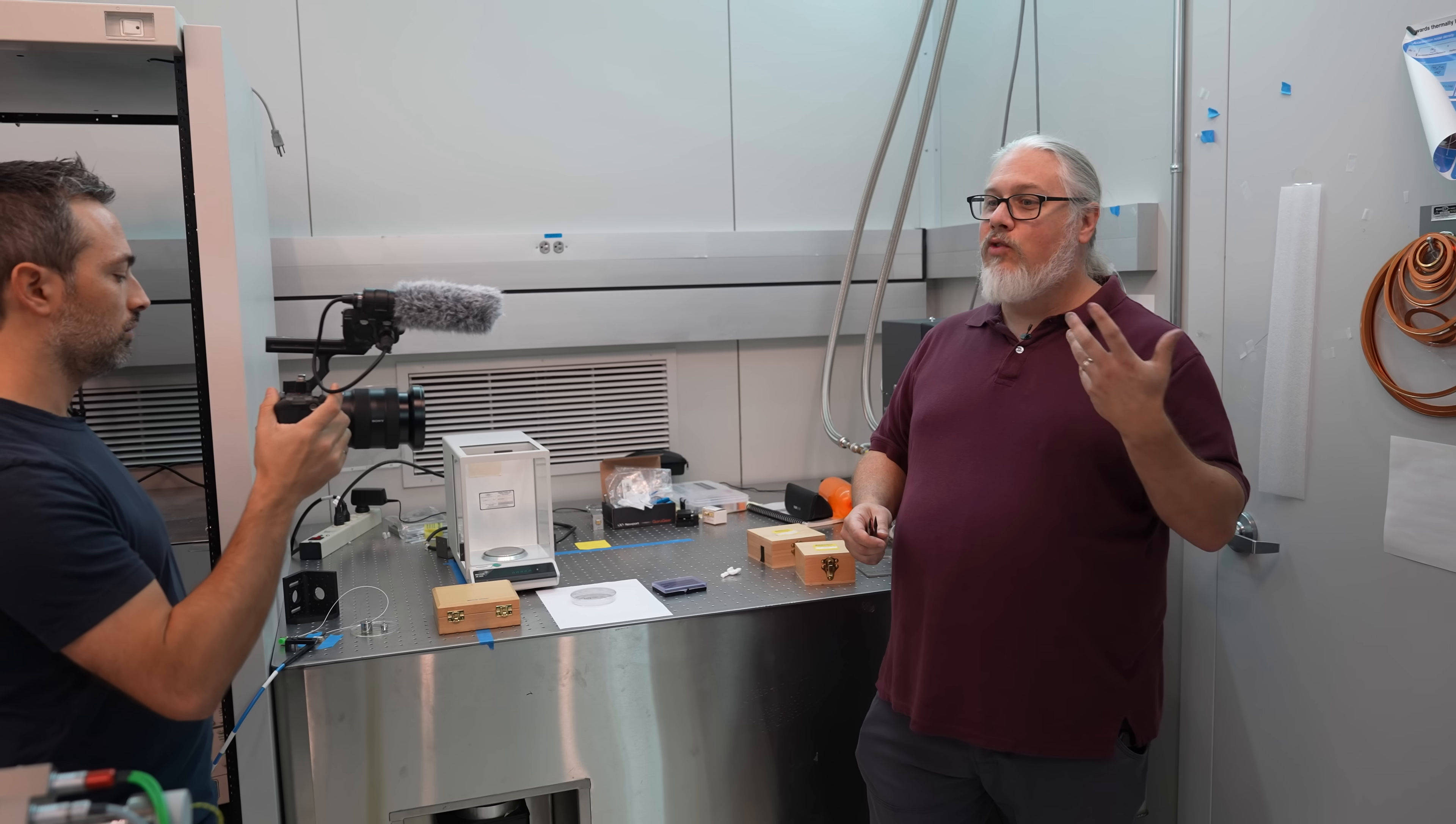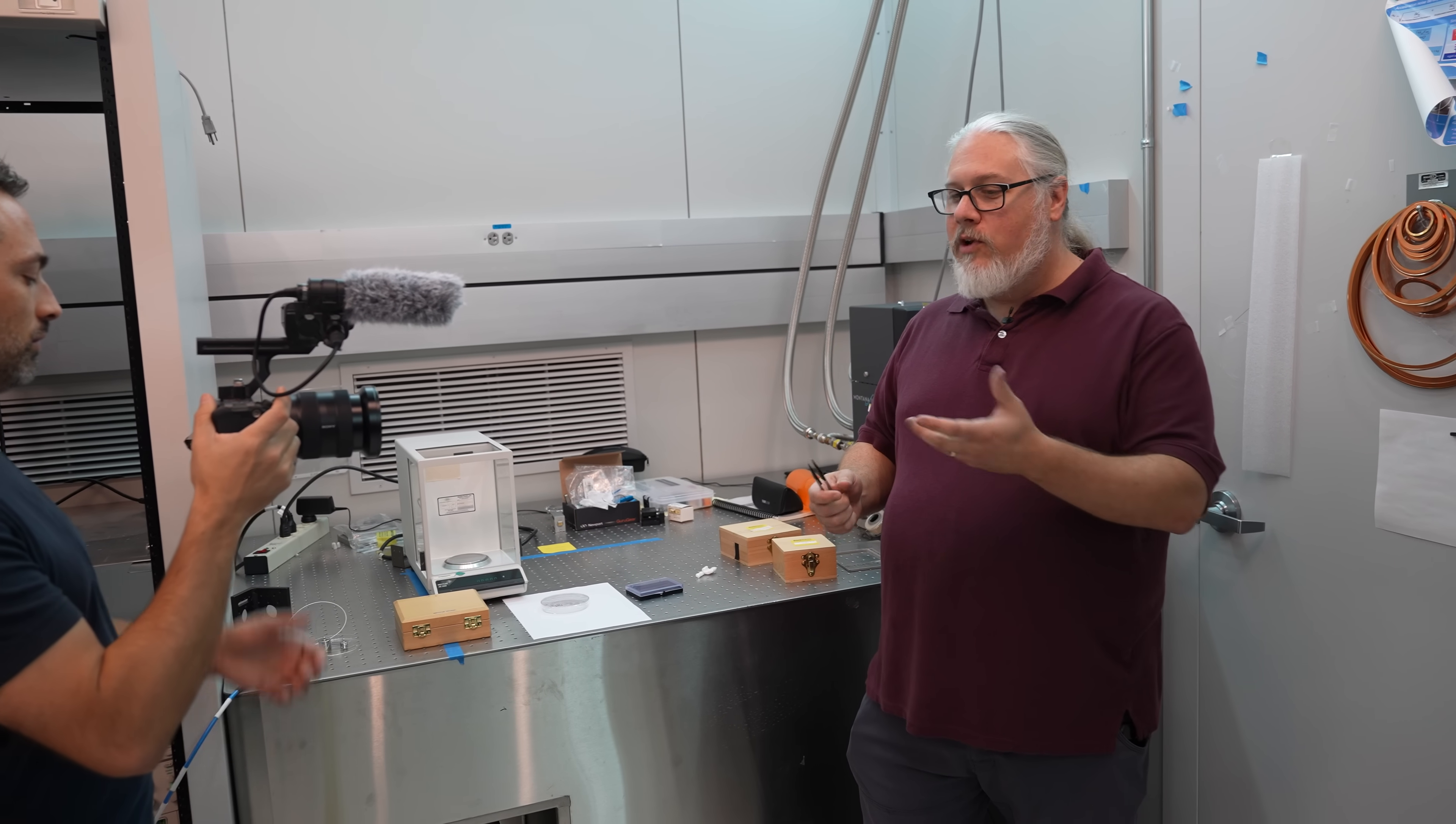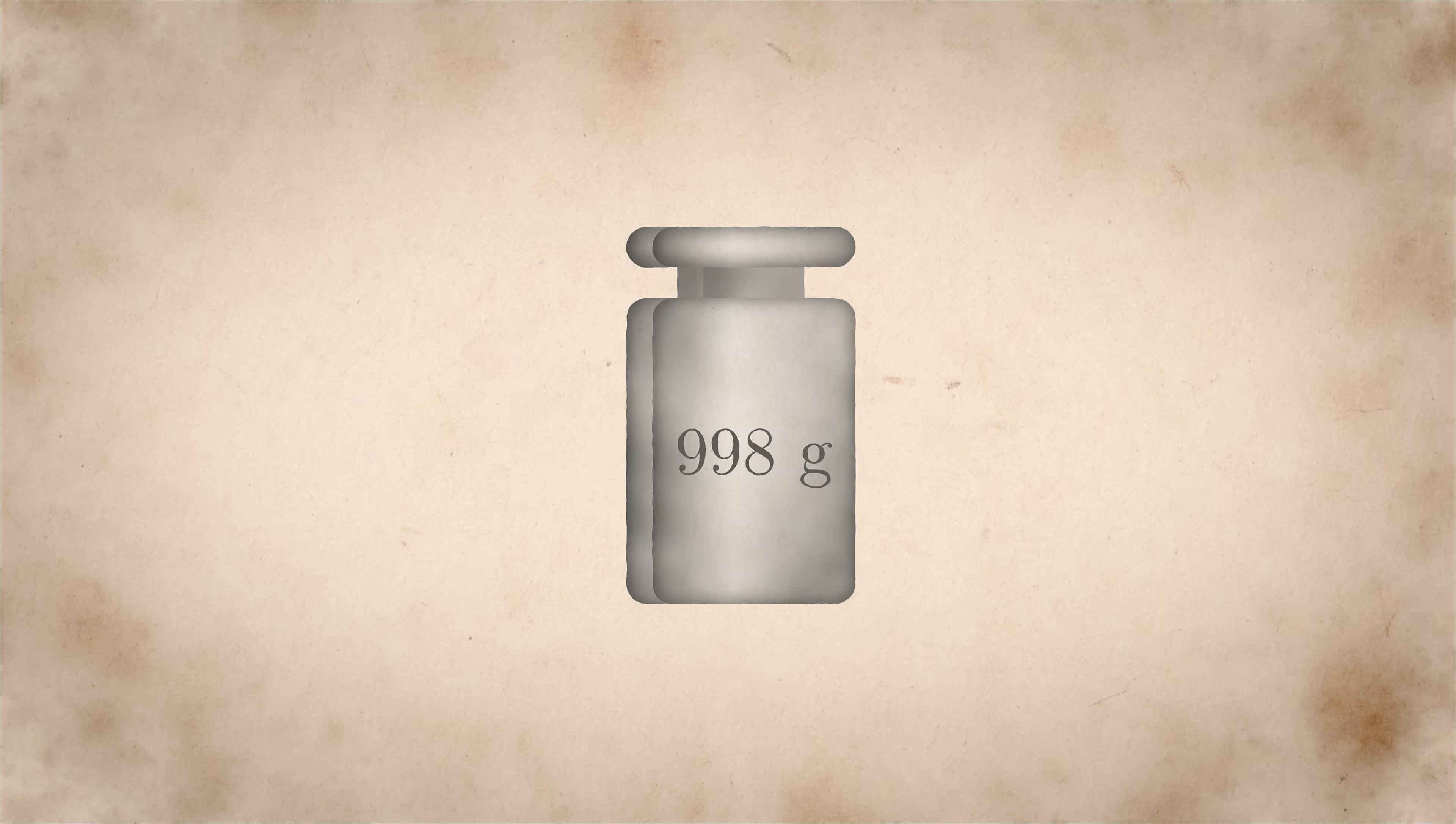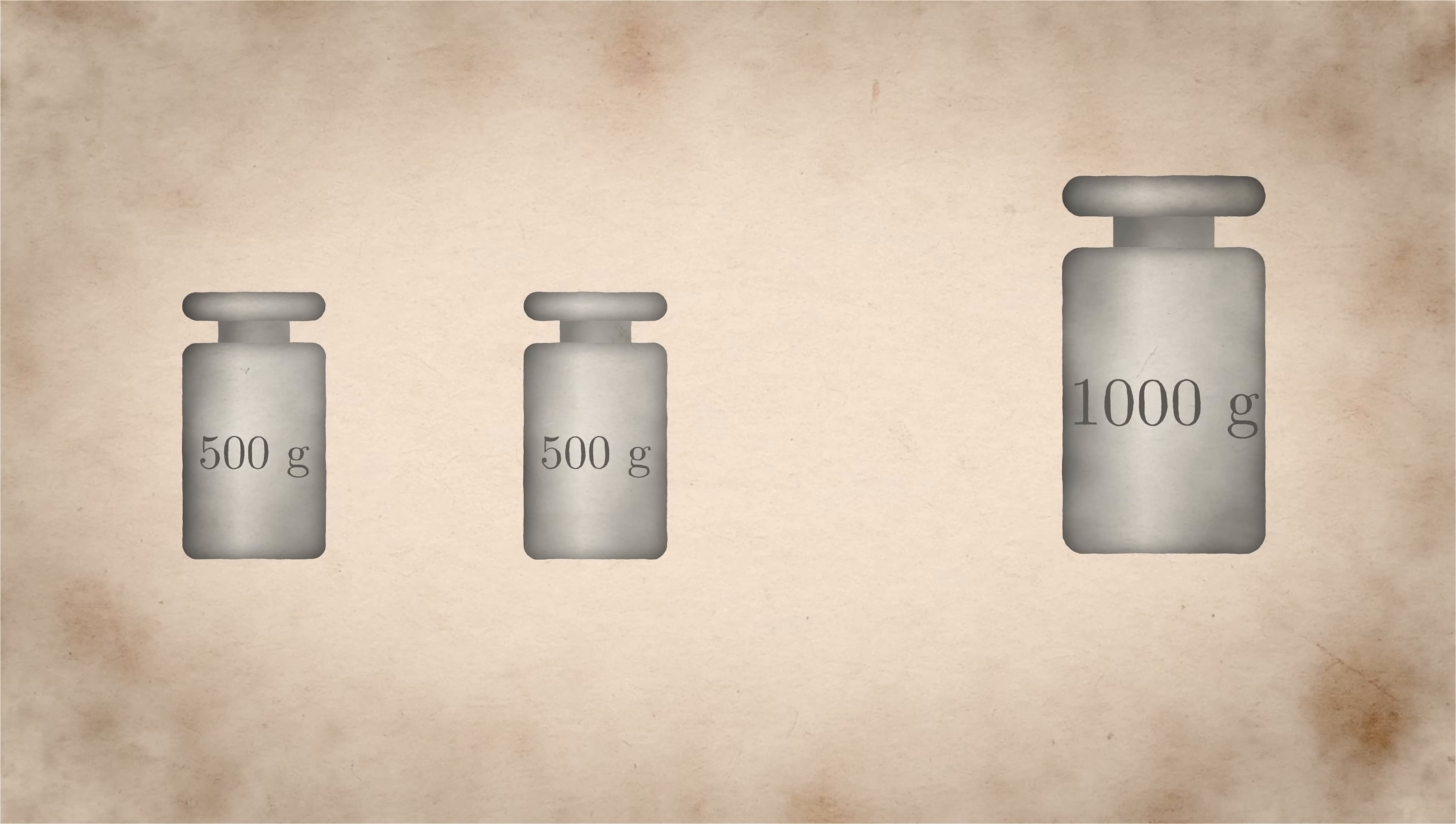One of the ways to do it is using conventional mass metrology, which is that you take the kilogram and you use a process called subdivision, where you compare other smaller masses against the kilogram.